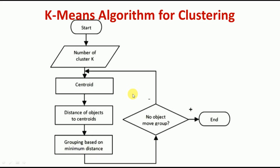This is the flow diagram of the K-means algorithm for clustering. We start the algorithm, then choose the number of clusters K, and select random centroids initially. We calculate the distance between the data points and the centroids, and depending on this distance, we assign the data points to one of the centroids. The grouping is based on the minimum distance.